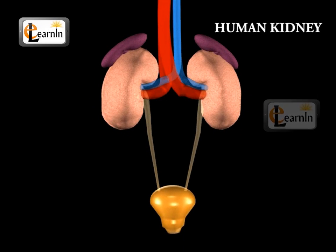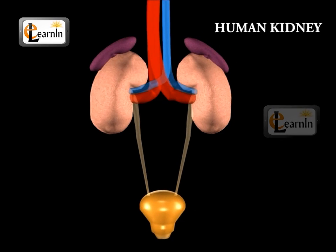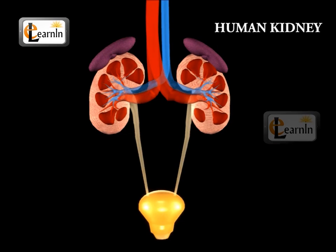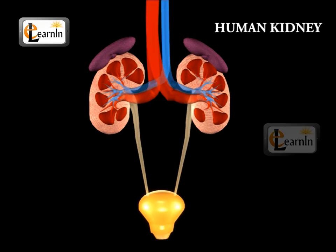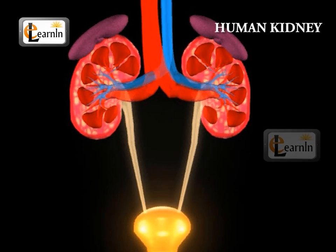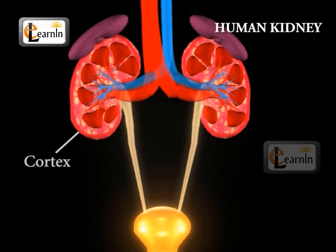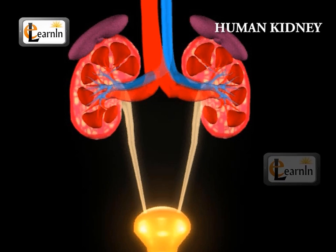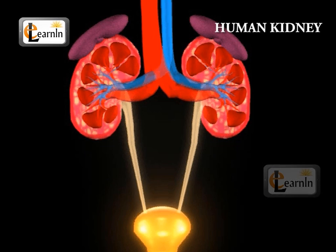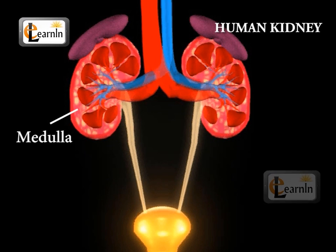Now let's understand the structure of a kidney. The outer region of the kidney is deep red in color and is called the cortex. The inner region is light red colored and is called the medulla.